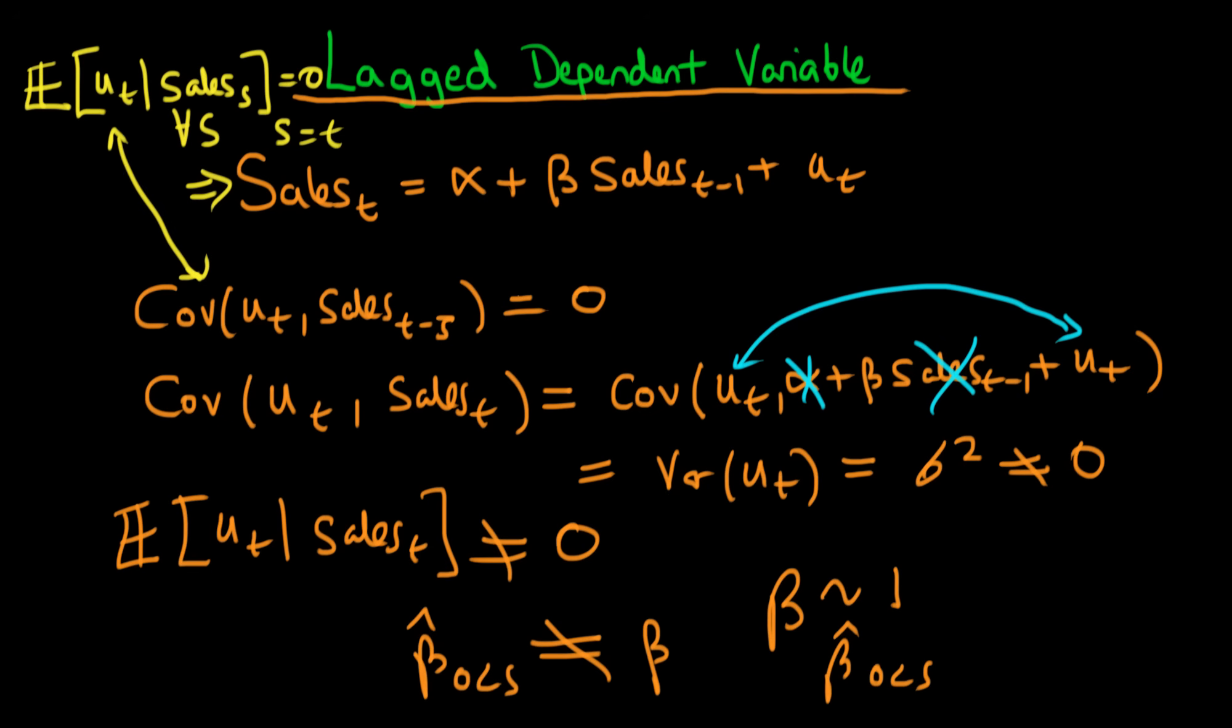So you can ask how do we actually go about estimating these types of models when we have a lagged dependent variable? Well, it actually turns out that after we assume some other things, it turns out that beta hat ordinary least squares will still tend, if we increase our sample size, to the true population parameter beta as our sample size goes to infinity.